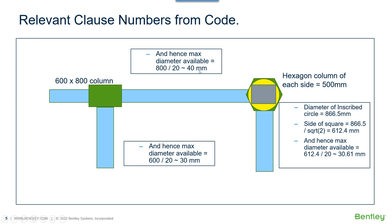For the right-hand side, where the column is a polygon (pentagon, hexagon, or any polygon), RCDC plots an inscribed circle, and for that inscribed circle an inscribed square is determined. The side of the square is divided by 20 to determine the maximum diameter. In this case, the hexagon has each side of 500 mm; the inscribed circle diameter is 866.5 mm, giving an inscribed square side of 612 mm. Dividing 612 by 20 gives 30 mm, but 30 mm is not in the list, so it comes down to 25 mm.